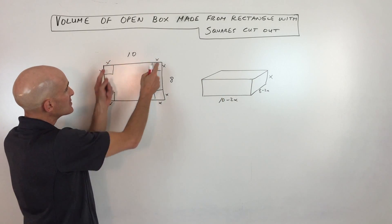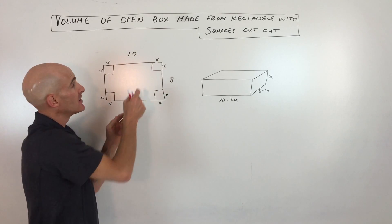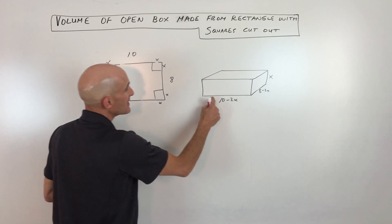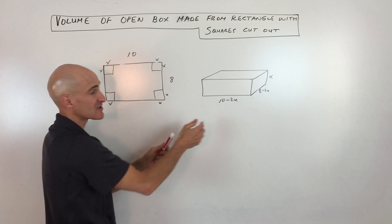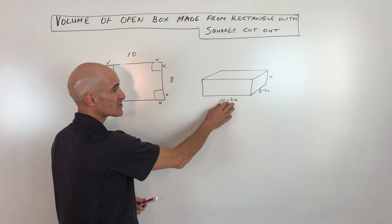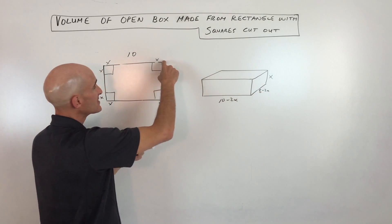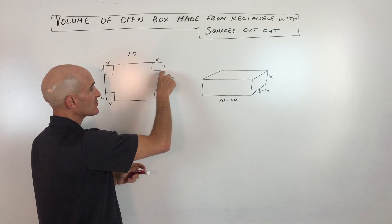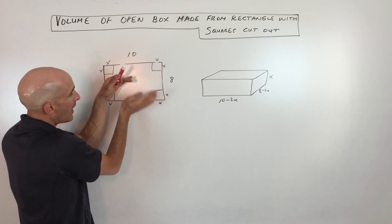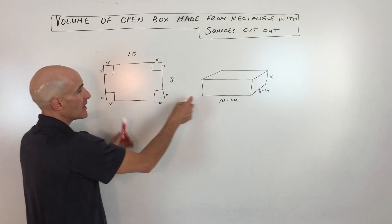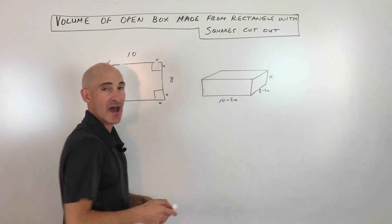Now when you do that, when you take away x from both sides, this length here becomes 10 minus 2x because you're taking x off of both sides. Sometimes students make the mistake of just saying 10 minus 1x. It's 10 minus 2x. And same thing with this side, you're cutting off x, you're cutting off x. So this length here is just going to be 8 minus 2x. And then when you fold up these sides, you get a height of x.